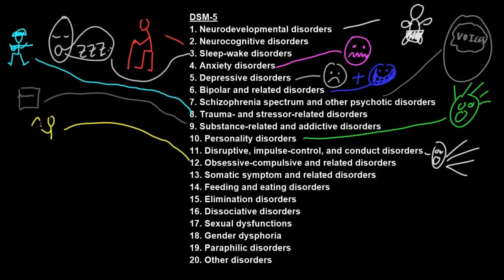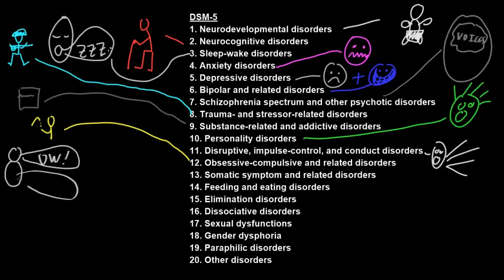Somatic symptom and related disorders involve distress or disability from symptoms similar to those that may occur with illness unrelated to a mental disorder, but the symptoms are of psychological origin — with or without also having symptoms of a general medical condition at the same time. An example could be someone that has abdominal pain, but there is actually nothing physically wrong with the abdomen; the tissues are fine and it is really caused by psychological factors like stress.